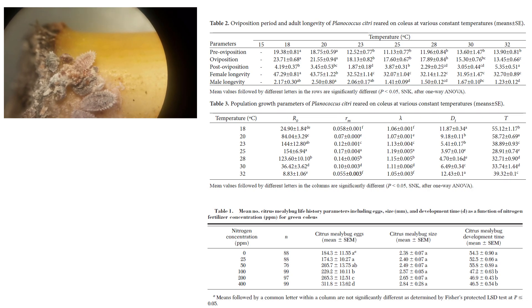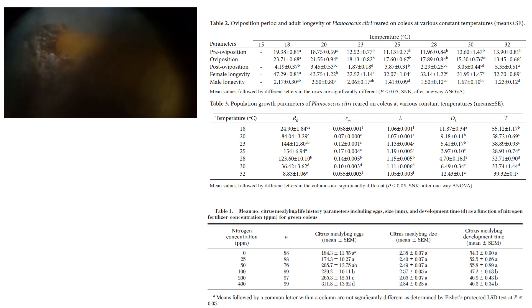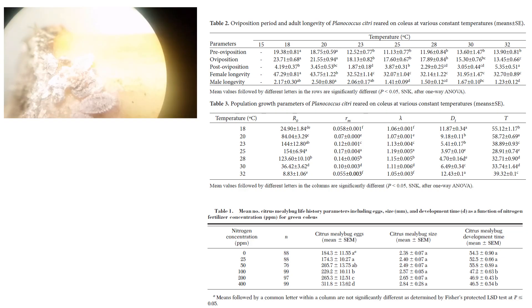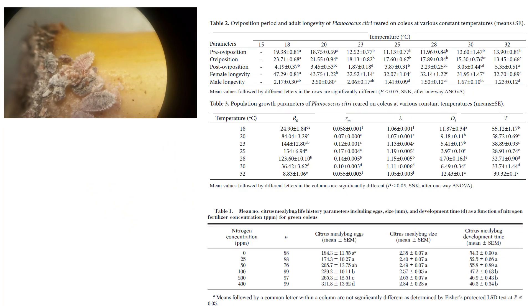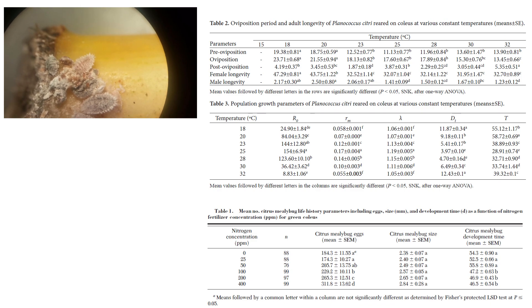The highest values of intrinsic rate of natural increase and finite rate of natural increase, as well as the lowest values of doubling time and mean generation time, occurred at 25 degrees Celsius, suggesting that this would be the optimal developmental temperature. The observation of more males at extreme temperatures like 32 degrees Celsius can be seen as an adaptive response to stressful environmental factors. Highest average longevity was greatest at 18 degrees Celsius for females. Oviposition was not successful at 15 degrees Celsius, and nymphs could not complete their life cycle starting around 35 degrees Celsius.